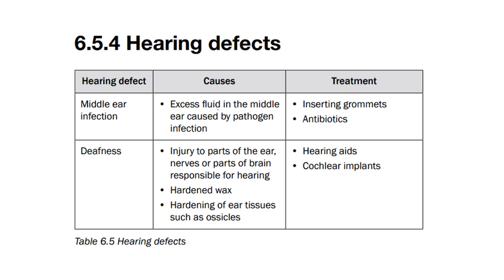This is usually caused by excess fluid in the middle ear caused by pathogen infection. It could also be caused by a buildup of mucus. Treatment for middle ear infections is usually antibiotics or inserting grommets. Grommets are when a small hole is created in the tympanic membrane to equalize the pressure on either side of the tympanic membrane.